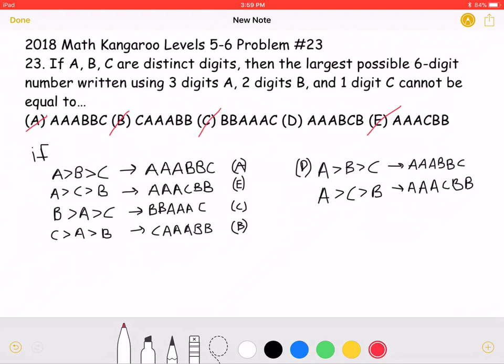Now for answer choice D. If A were to be greater than B and greater than C, then we would have AAABBC. Or, if A were to be greater than C, greater than B, we would have AAACBB.